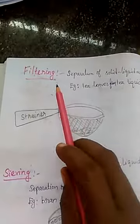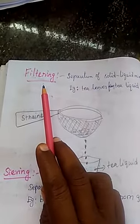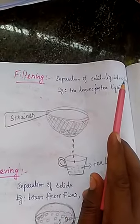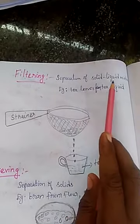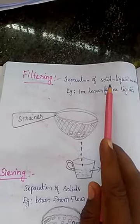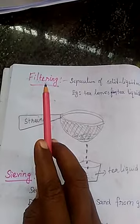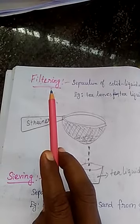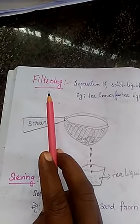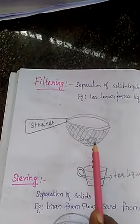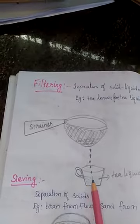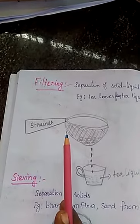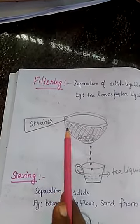The first separation method is filtering, used for the separation of solid-liquid mixtures. What is filtering? The method used for removing solid particles from a pure liquid. Here we see a strainer or filter.